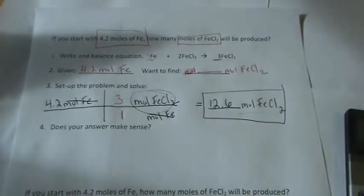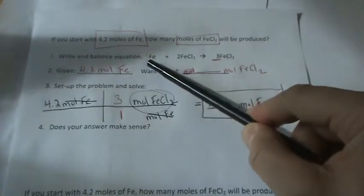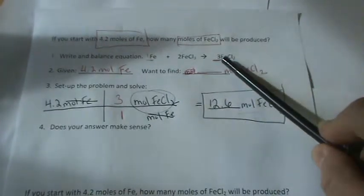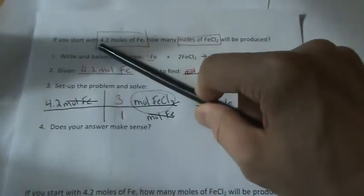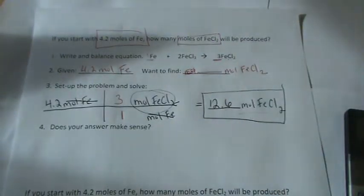Let's take a look and see if that makes sense. So for every 1 mole of Fe, I get 3 times as many moles of FeCl2. So 3 times 4.2, that's 12.6, so that answer does make sense.